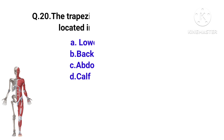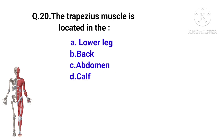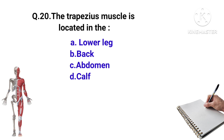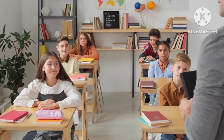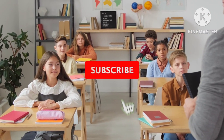Question number 20. The trapezius muscle is located in the: lower leg, back, abdomen, or calf? This question is left for you to answer in the comment box. Tell me what questions you have in the comment box and I will respond.